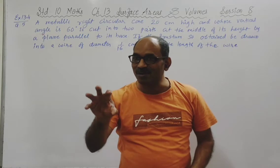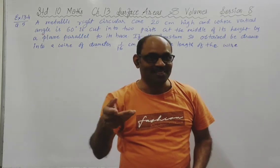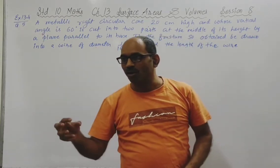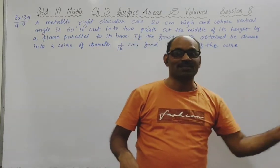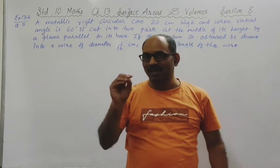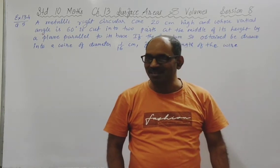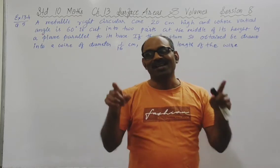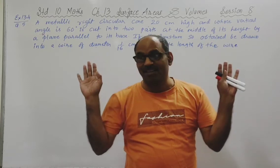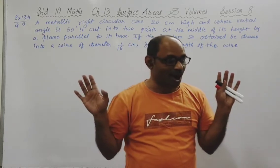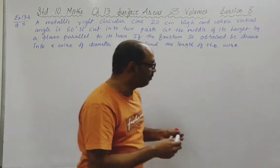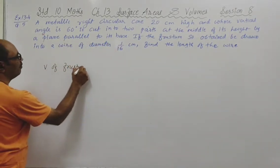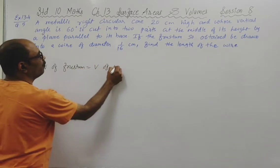The frustum of cone is melted and turned into wire - from one solid object another solid object is prepared by the process of melting and recasting. What remains the same here is the volume. The shape may change and surface area will change, but the volume will not change. So the basic concept is: volume of frustum equals volume of wire.